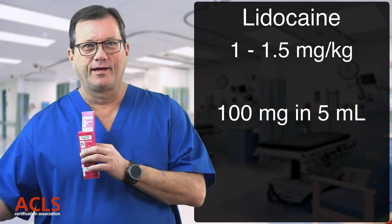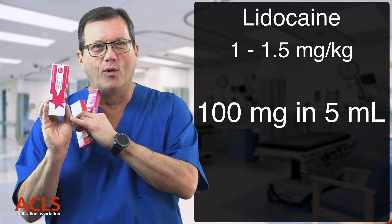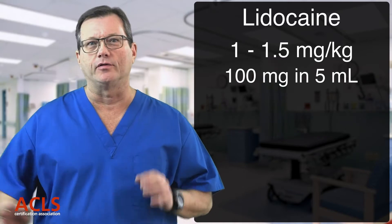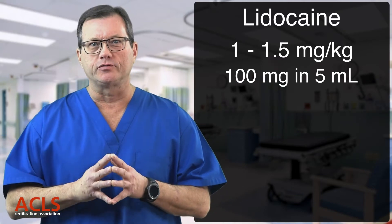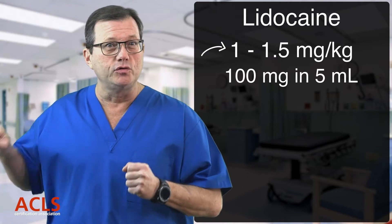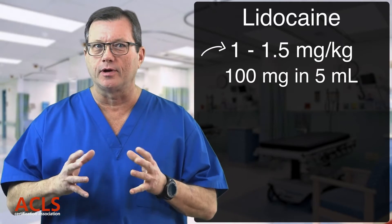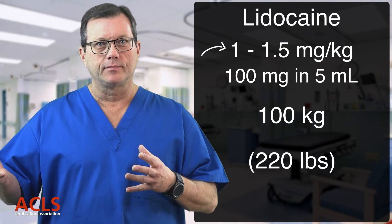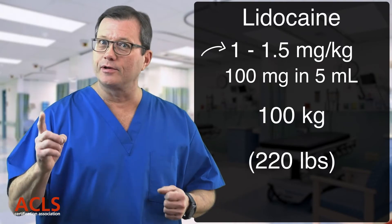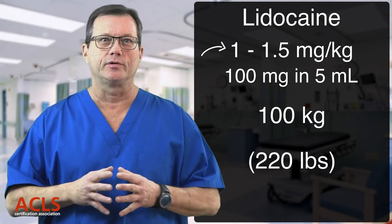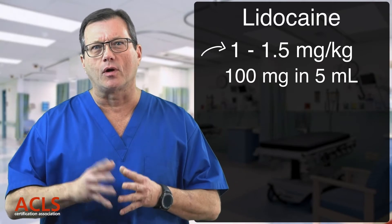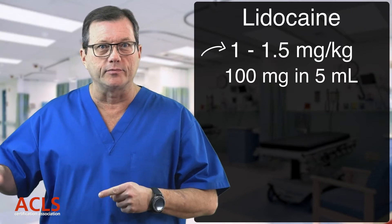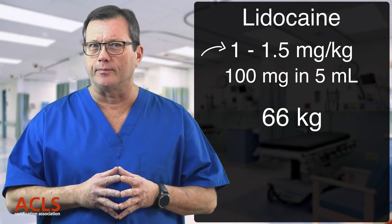Here's one manufacturer's package: 100 milligrams in 5 mls. Here's another: 100 milligrams in 5 mls. So lidocaine comes packaged as 100 milligrams in 5 mls. If I wanted to administer 1 milligram per kilogram and use that whole ampule — all 100 milligrams — my patient would have to weigh 100 kilograms or 220 pounds. If I wanted to administer 1.5 milligrams per kilogram using the whole vial, my patient would have to weigh 66 kilograms or about 146 pounds.